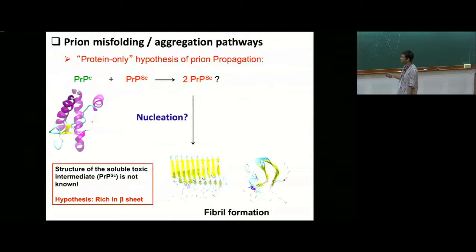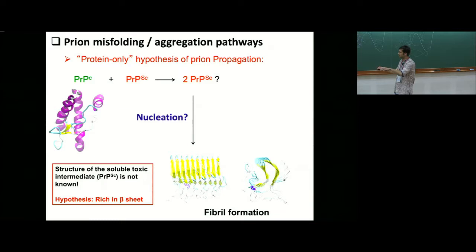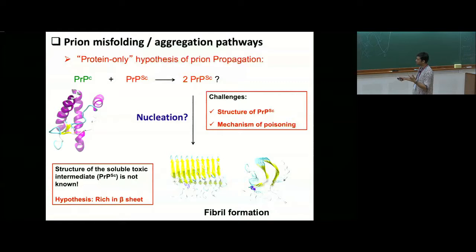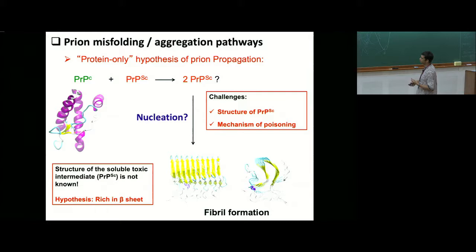The protein-only hypothesis of prion propagation suggests that the cellular form of prion interacts with the misfolded scrapie form, converts to the scrapie conformation, and further nucleates into amyloid fibrils — the hallmark of all neurodegenerative diseases, where misfolded proteins aggregate into fibrils that deposit on tissue and lead to neurodegeneration. The key challenges are: the structure of this intermediate toxic scrapie form is not known, and the mechanism of poisoning — how one conformational form of a protein induces misfolding into another conformational form — is also not understood.